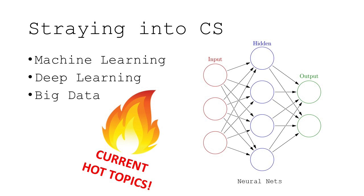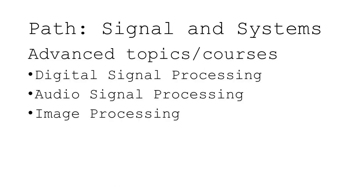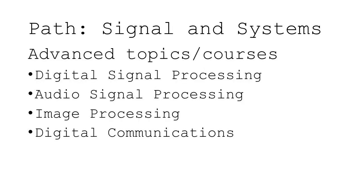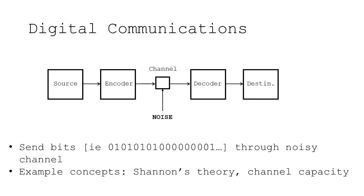There's also the topic of digital communication, where you basically view data as just bits and figure out how to send the data to achieve a certain bit rate. That's when you start learning about Shannon's theory, channel capacity, and stuff like that. If you don't get all the vocabulary I'm throwing at you, don't worry too much — you have plenty of time to take these courses and learn what they are.